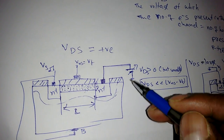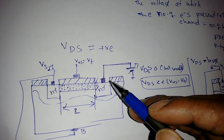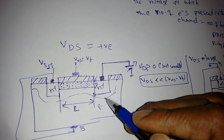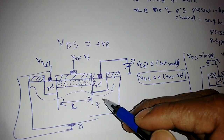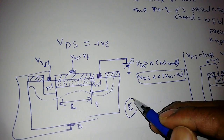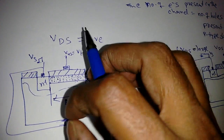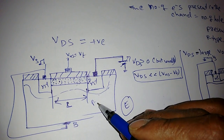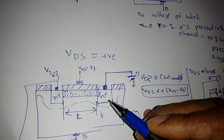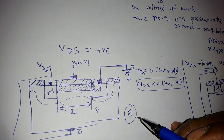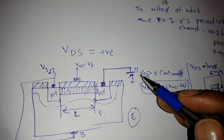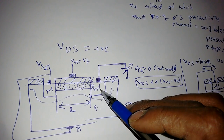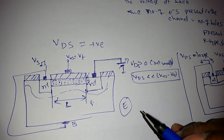As we increase VDS, an electric field is generated. Because the n-plus region meets the p-type substrate, a reverse bias is created, which generates an electric field. This electric field attracts the electrons into the drain. When we apply more voltage, the electrons move faster, taking less time to reach the drain, so the current keeps increasing.